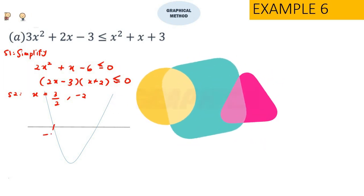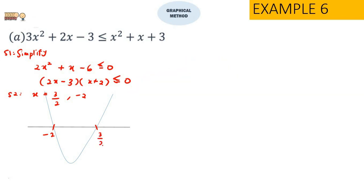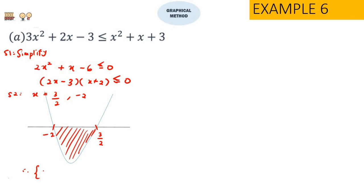The smaller value is negative 2 and the greater one is 3 over 2. Since we have less than or equals to 0, we look at the region under the graph — that is between the two roots. So our answer is x such that negative 2 is less than or equal to x, which is less than or equal to 3 over 2, because we have the equal sign.